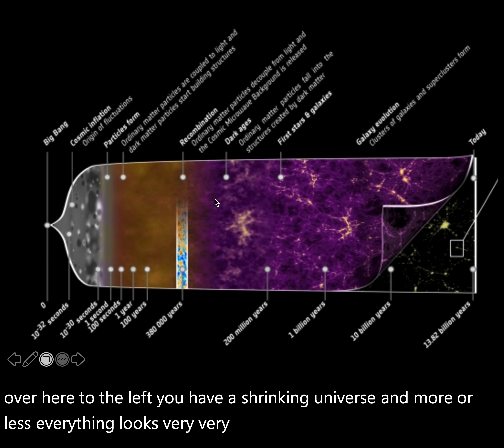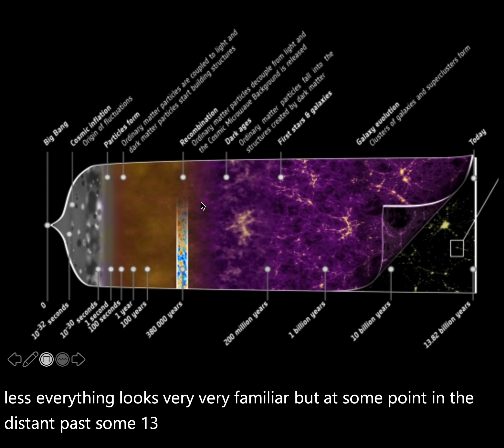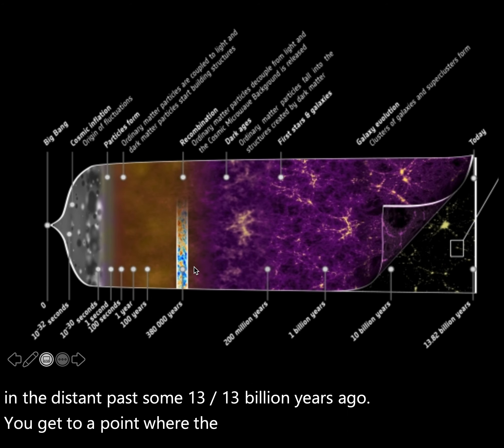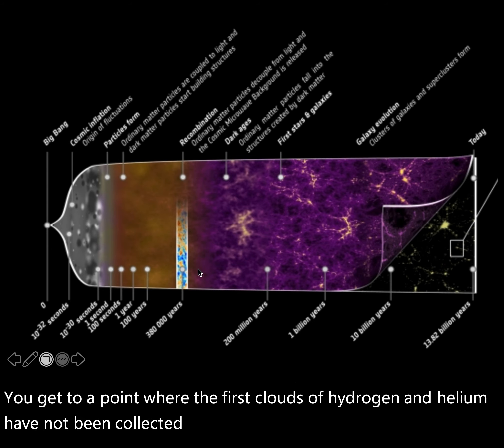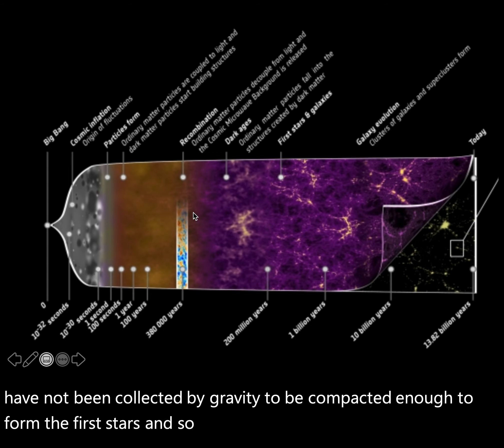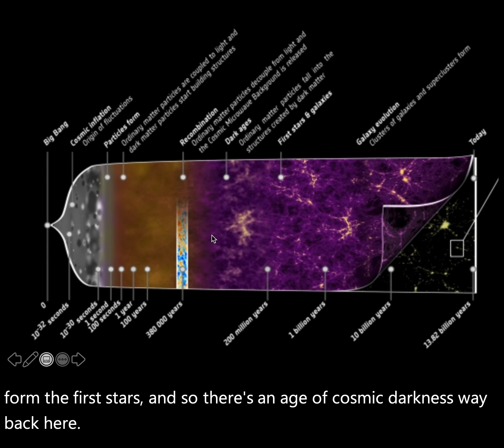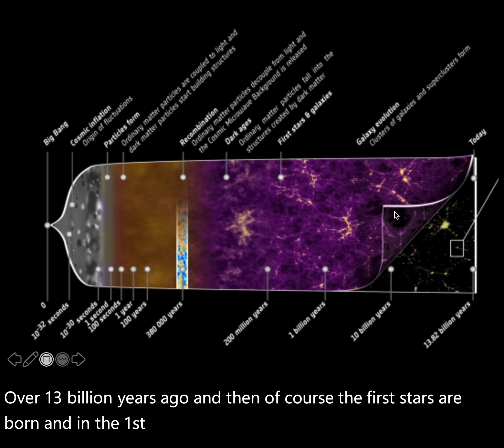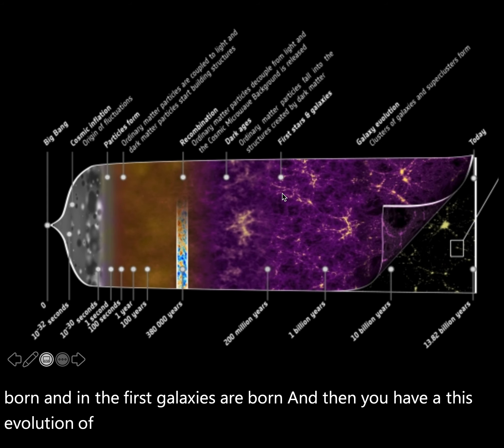Everything looks very familiar, but at some point in the distant past, over 13 billion years ago, you get to a point where the first clouds of hydrogen and helium have not been collected by gravity to be compacted enough to form the first stars. And so there's an age of cosmic darkness way back here, over 13 billion years ago. And then of course the first stars are born, and then the first galaxies are born, and then you have this evolution of a universe that looks familiar to us today.